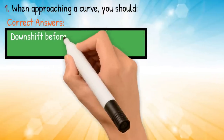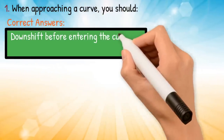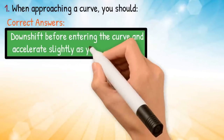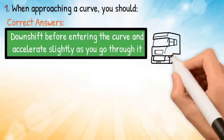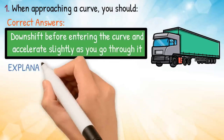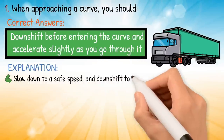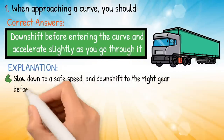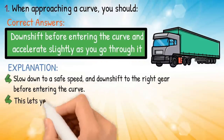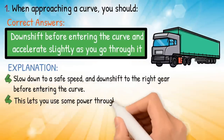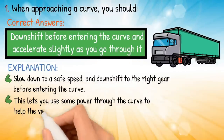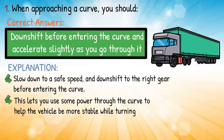Downshift before entering the curve and accelerate slightly as you go through it. Explanation: slow down to a safe speed and downshift to the right gear before entering the curve. This lets you use some power through the curve to help the vehicle be more stable while turning, and allows you to speed up as soon as you're out of the curve.